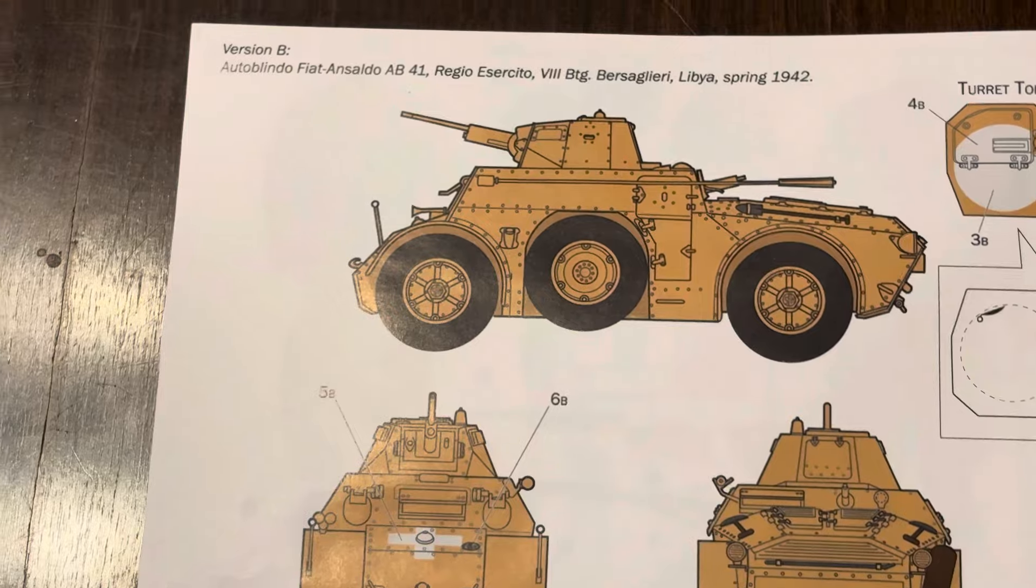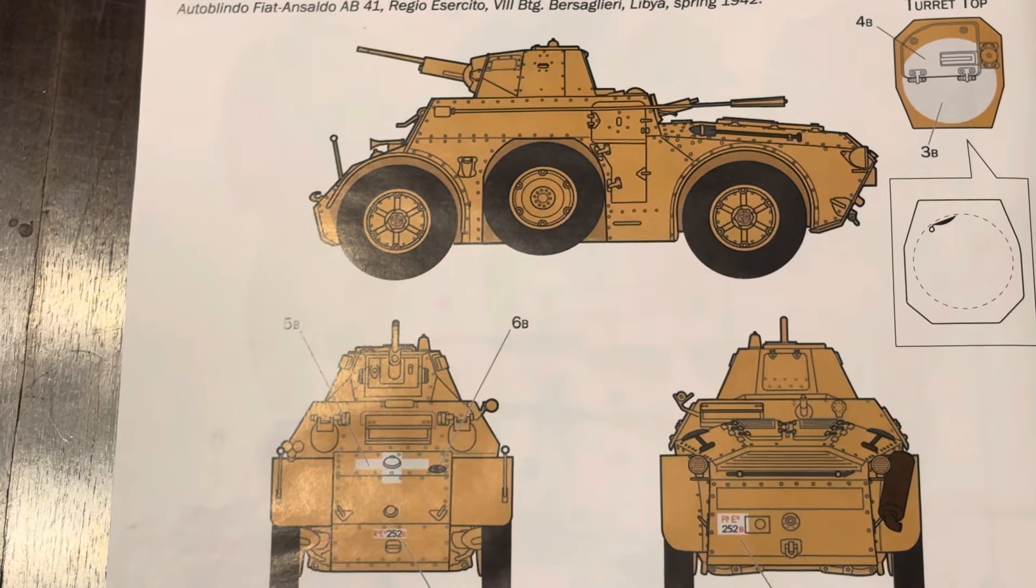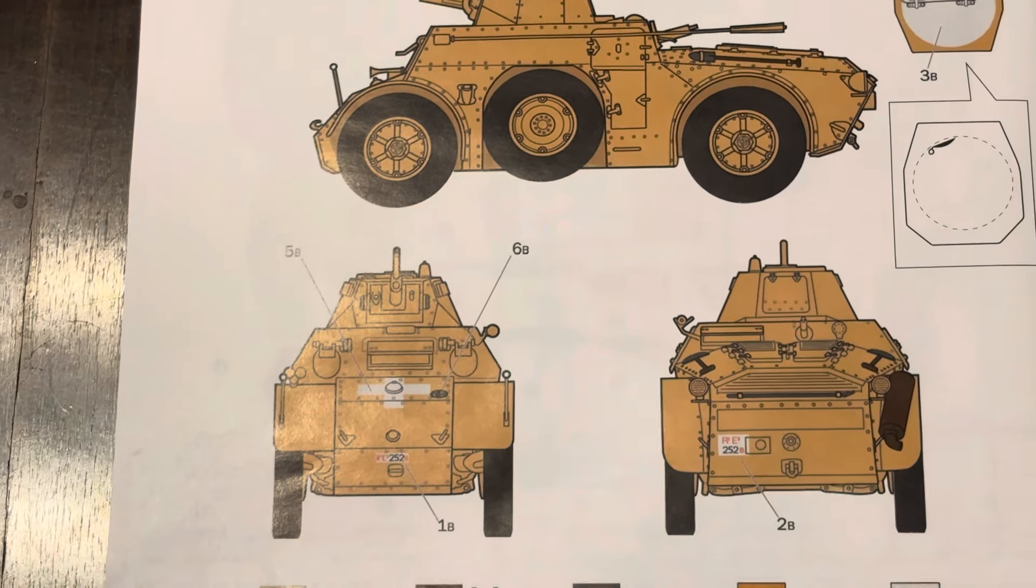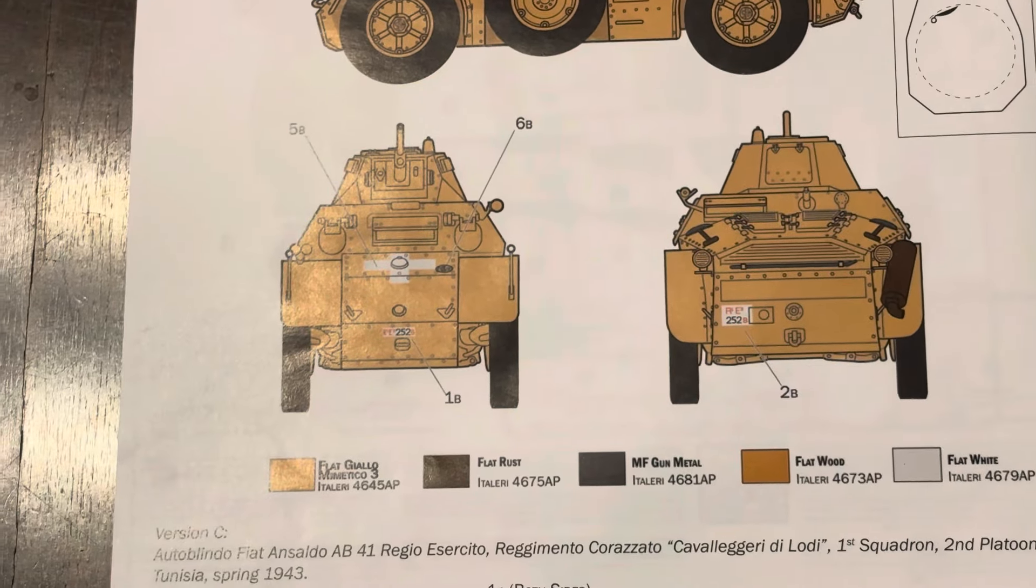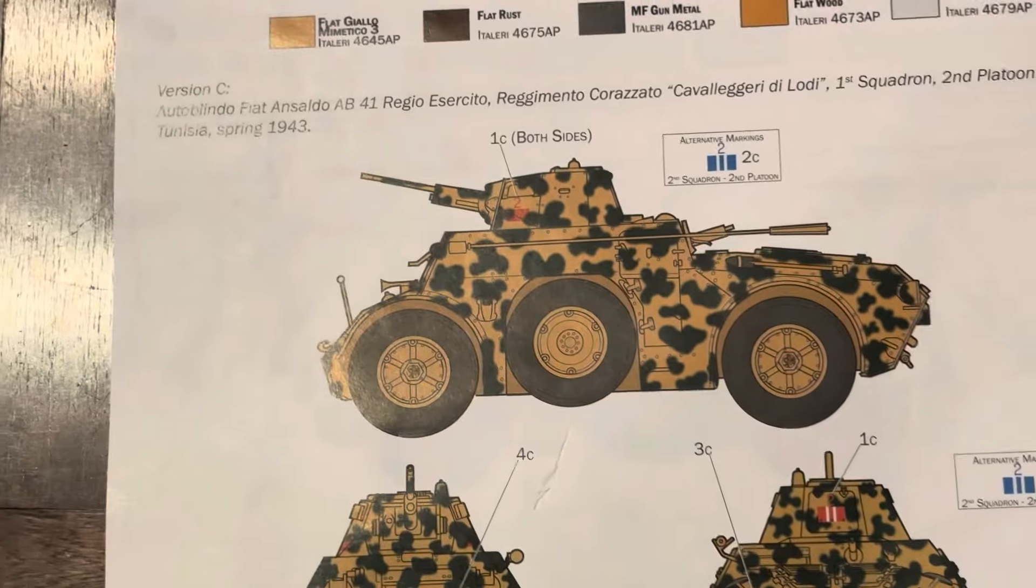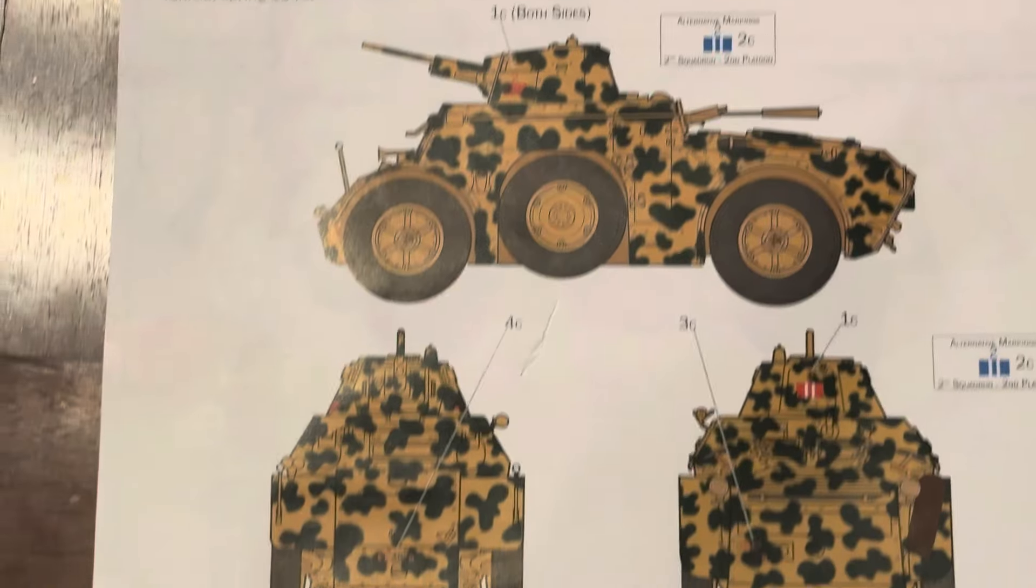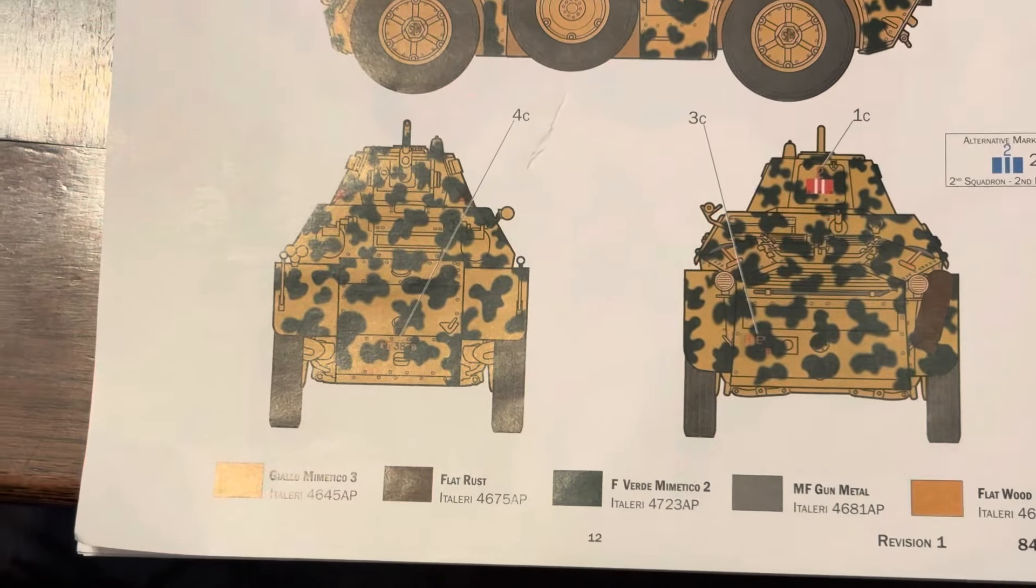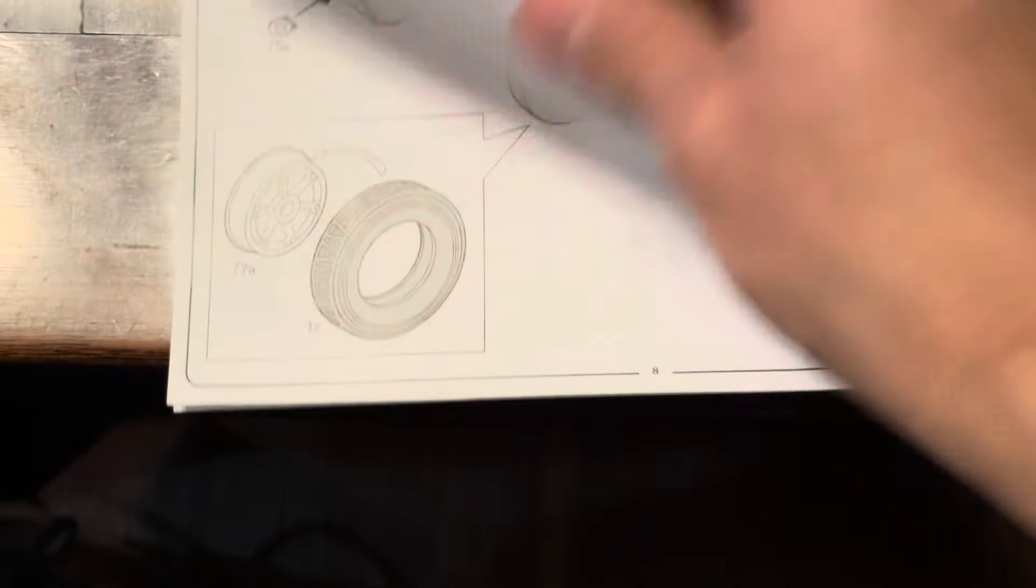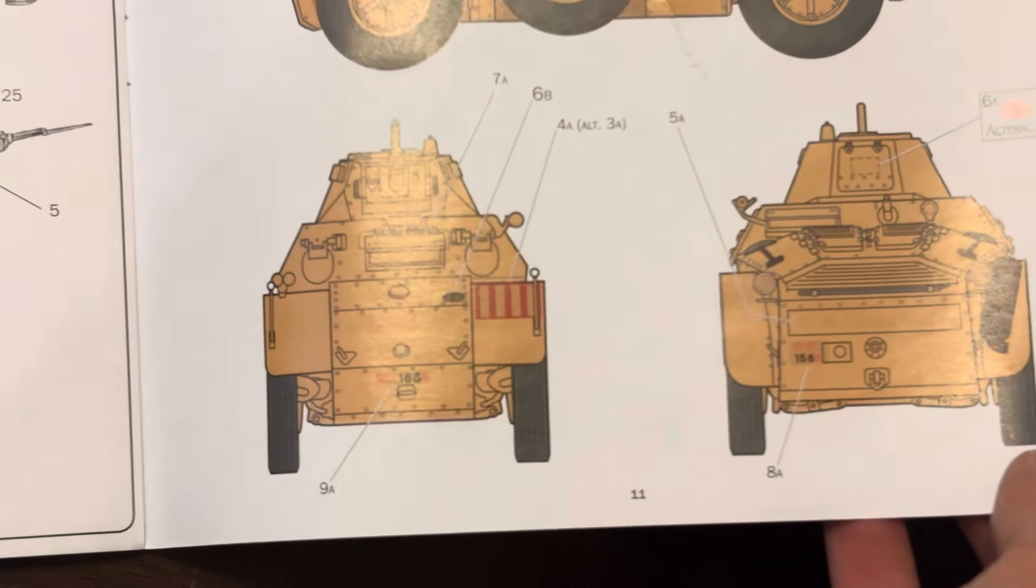Here is the Libya spring 1942 scheme with the white locating circle. Here is Tunisia spring 1943. That one's pretty boring. I might go with the one on the front cover with those pretty cool stripes because it looks nice.